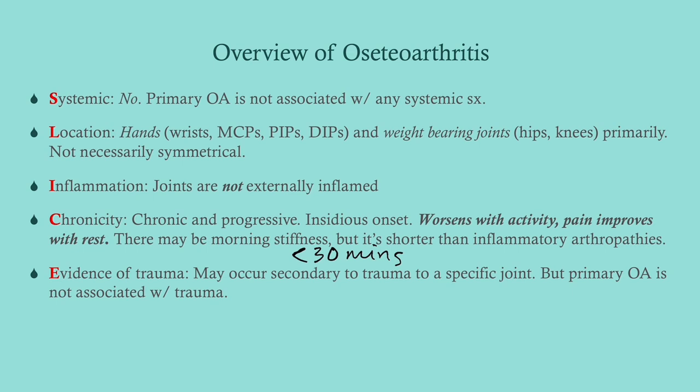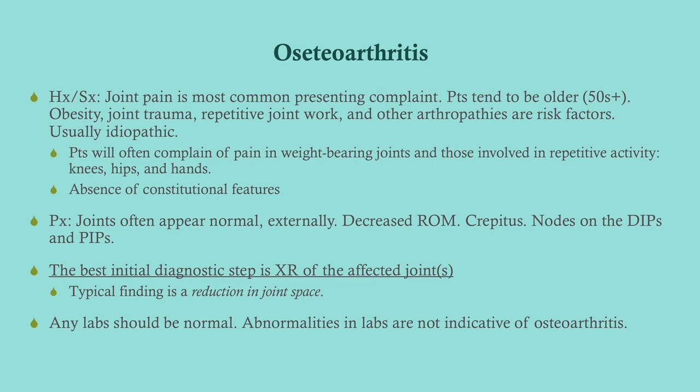Evidence of trauma can worsen osteoarthritis, so look for joint pain as the presenting complaint. Patients tend to be older, tend to be overweight — putting more stress on the joints — and may have repetitive joint use. Think of a long-distance runner of 30 years developing knee OA, or a secretary spending a lot of time typing. An absence of constitutional features is really important to distinguish this from things like RA, though age will tell you a lot as well.